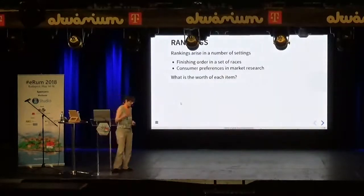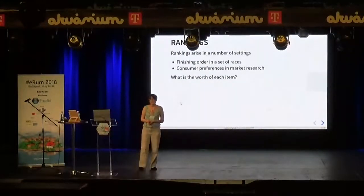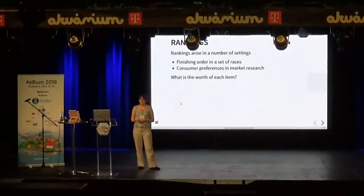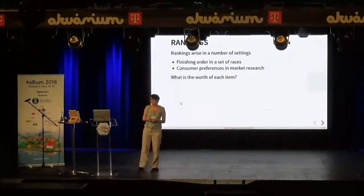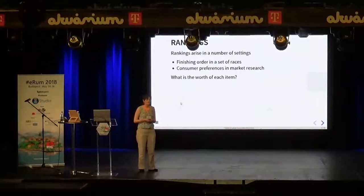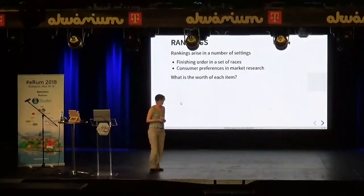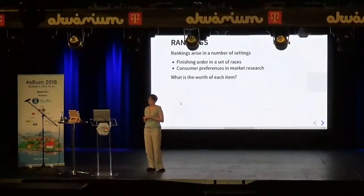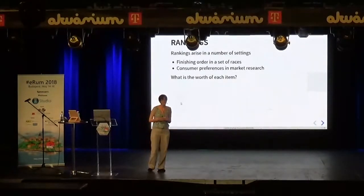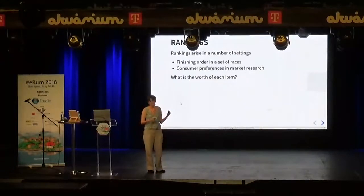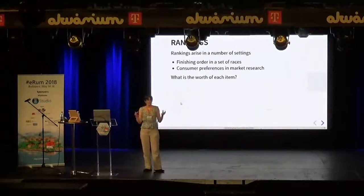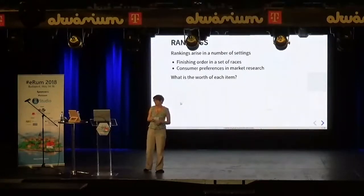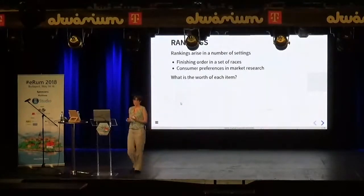I'm talking about rankings. You can imagine rankings arising in various different settings, such as athletes and where they finish in a race, or preferences that somebody expresses about a product. But I'm really thinking about cases where we have lots of these rankings. If we just have a single ranking, that's it. But what do we do when we have lots of rankings, and how do we get the information from that to decide what the worth of each item is?